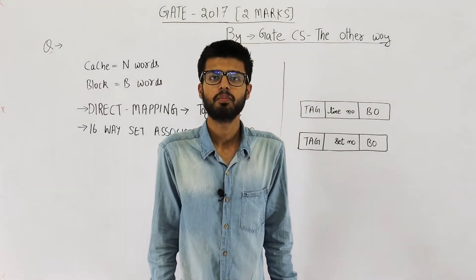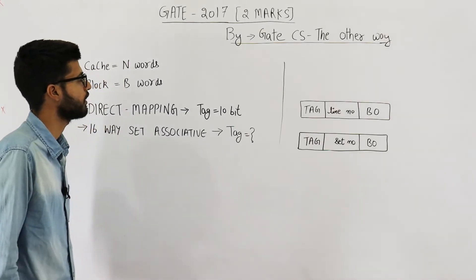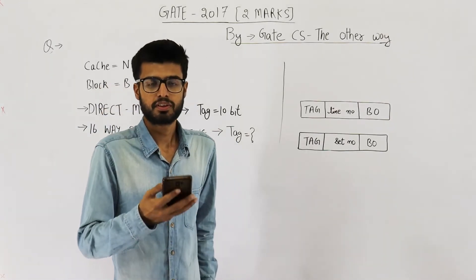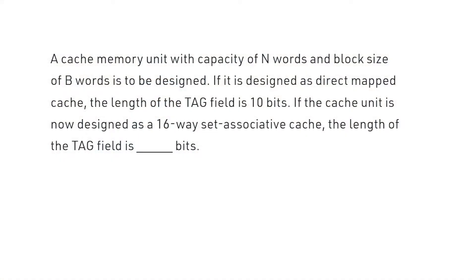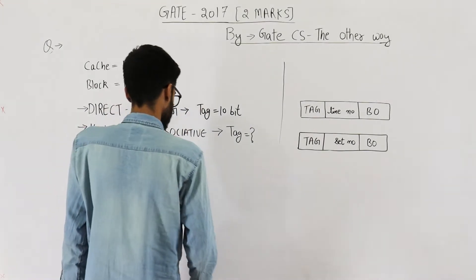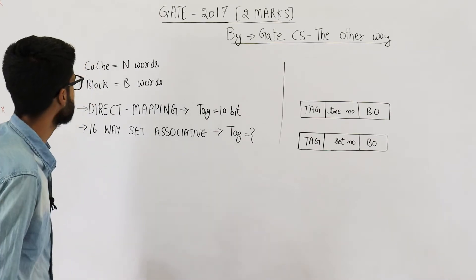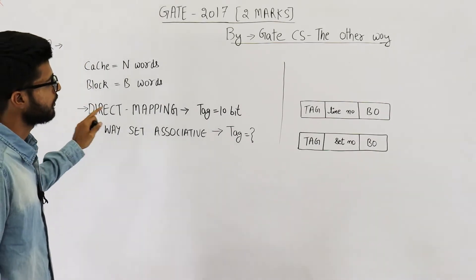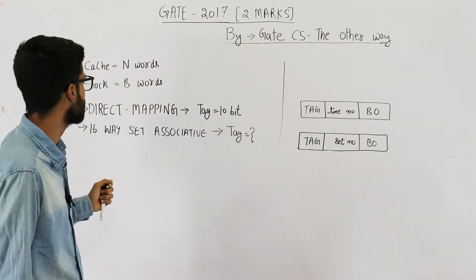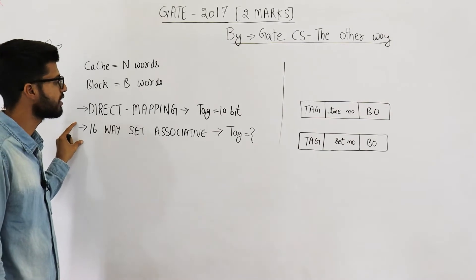Hello people, welcome back. This question is from GATE 2010 Set 1 exam, it's for two marks. The question reads: a cache memory unit with capacity of N words and block size of B words is to be designed. If it is designed as direct mapped cache, the length of the tag field is 10 bits. If the cache unit is now designed as a 16-way set associative cache, the length of the tag field is how many bits?